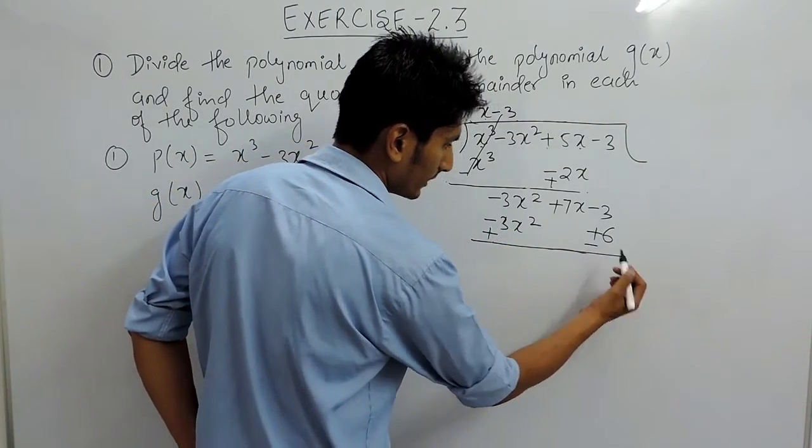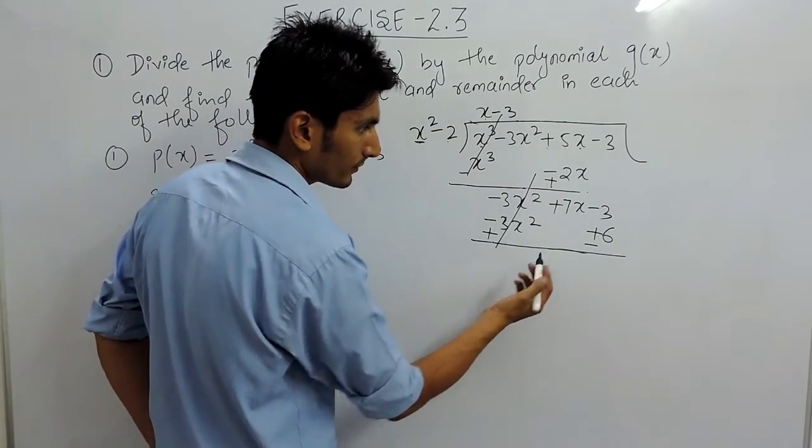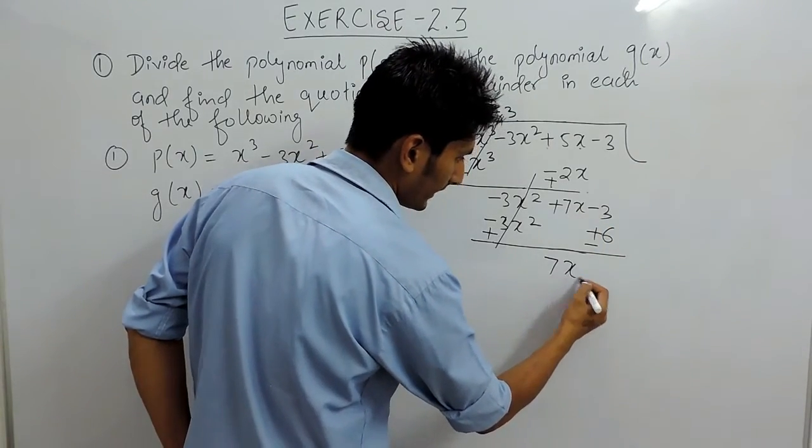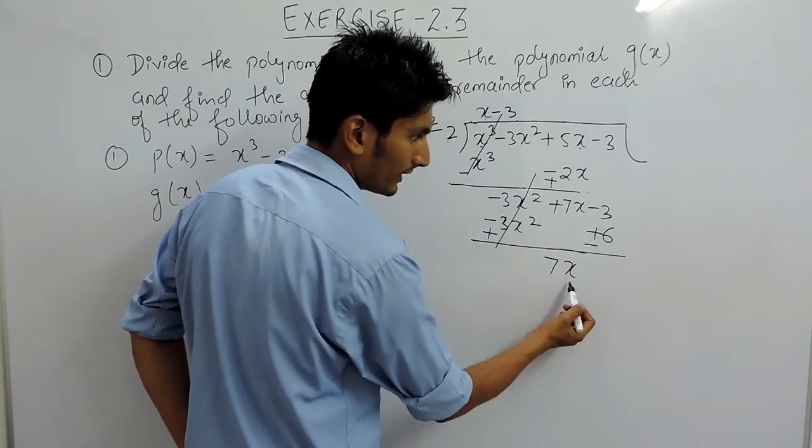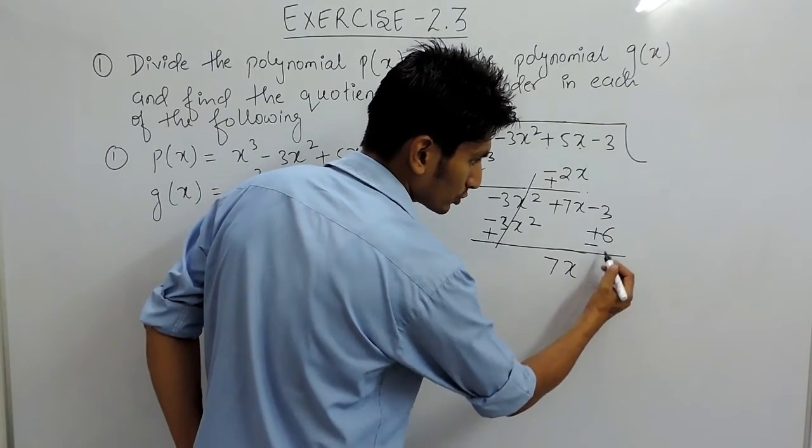After that, you have to subtract these, and for subtracting you have to change the signs. This negative will become positive and this positive will become negative, so this positive and this negative can be cancelled out.